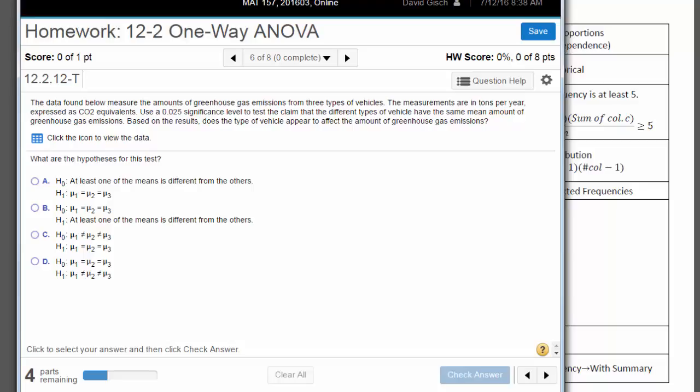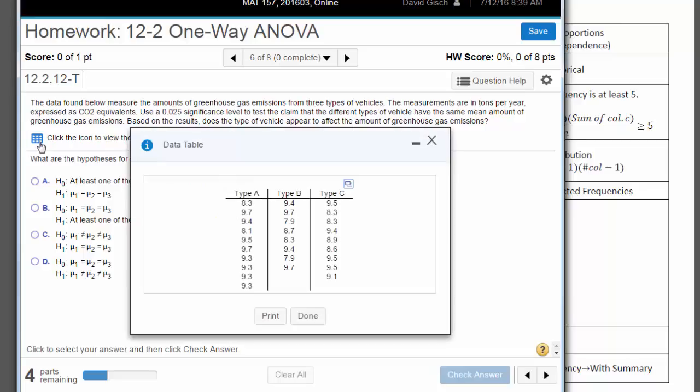Use a 0.025 significance level to test the claim that the different types of vehicles have the same mean amount of greenhouse gas emissions. Based on the results, does the type of vehicle appear to affect the amount of greenhouse gas emissions? Let's check out the data. There is the data.